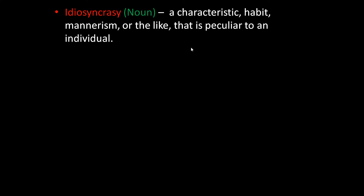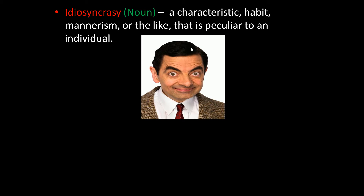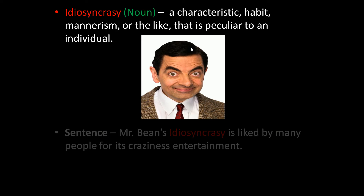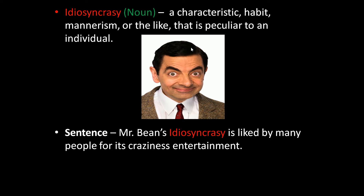The next word is idiosyncrasy. Idiosyncrasy is a noun. It means a characteristic habit or mannerism that is peculiar — that is, unique — to an individual. This is the photo of Mr. Bean. In this word it represents idiosyncrasy, that is his funny character. The sentence is: Mr. Bean's idiosyncrasy is liked by many people for its craziness and entertainment — meaning his funny and crazy character entertains people.